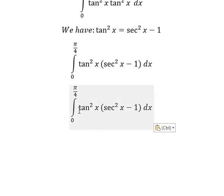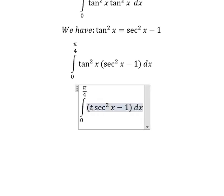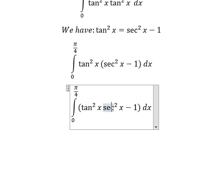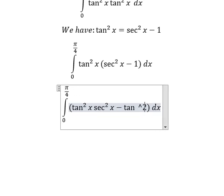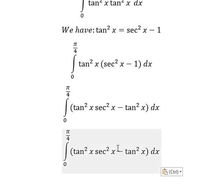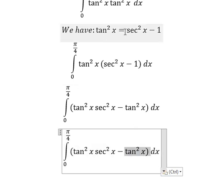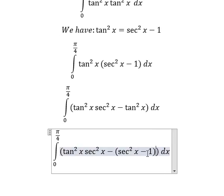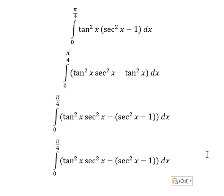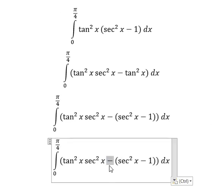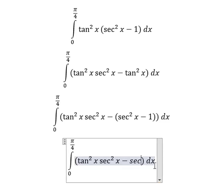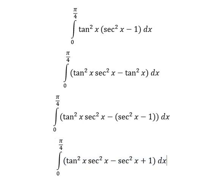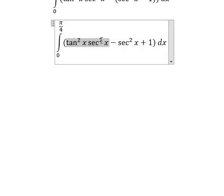Next, this one multiplied by this one and number one. Then we can change this one for this one. So on the negative side, this one with this one gives us negative secant of x squared plus one.